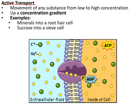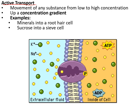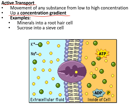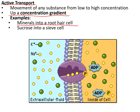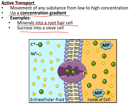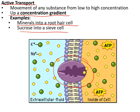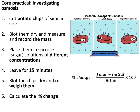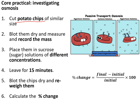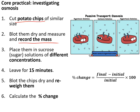Active transport moves substances from low concentration to high concentration, up a concentration gradient — for example how minerals go into roots from the soil, or how sucrose enters sieve cells in the phloem. Proteins in the cell membrane grab molecules from the low concentration side and move them to the high concentration side, using energy.